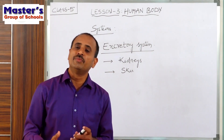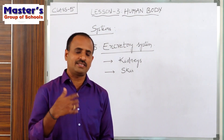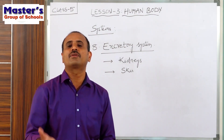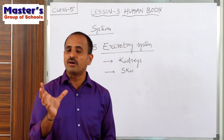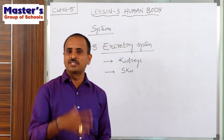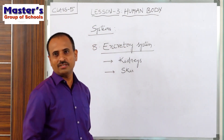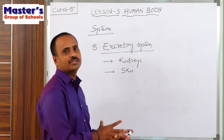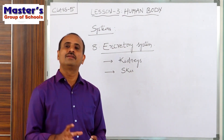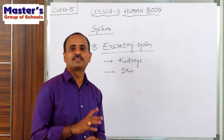Waste materials means it may be waste food, waste water, excess water, or excess salts - whichever it may be. The waste materials present in our body will be sent out through some organs. The process of sending out these waste materials is called excretion, and that system is called the excretory system. The parts which excrete the waste material from our body are kidneys and skin.